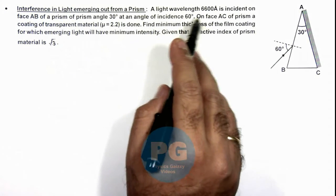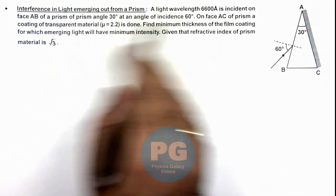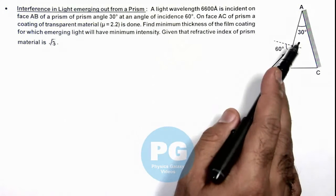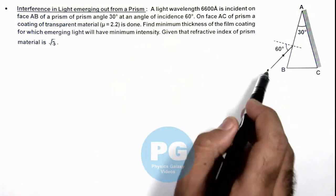light wavelength 6600 angstrom is incident on face AB of a prism of prism angle 30 degree at an angle of incidence 60 degree.